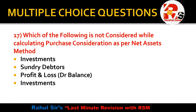Question 16 — which of the following is NOT considered while calculating purchase consideration as per the net assets method? Under the net assets method, we total all assets taken over and deduct liabilities taken over to get the purchase consideration. The options are investments, sundry debtors, profit and loss debit balance. The correct answer is profit and loss debit balance — it is a fictitious asset or miscellaneous expense which is NOT to be considered when calculating purchase consideration using the net assets method.